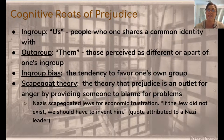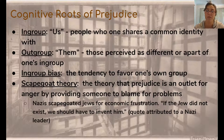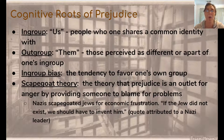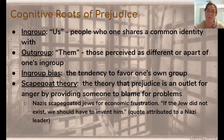Scapegoat theory is used a lot to try to explain political movements. For example, some researchers think that the Nazis used scapegoat theory to blame Jews for the economic frustration that resulted from the end of World War I. So the Nazis sort of deliberately did this — they turned the Jews into scapegoats. There's a quote attributed to a Nazi leader, which I tried to figure out if it was really said or just made up, and I couldn't find concrete proof either way. The quote reads: 'If the Jew did not exist, we should have to invent him.'